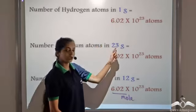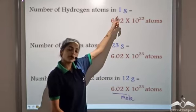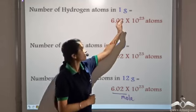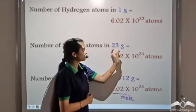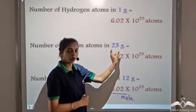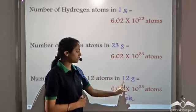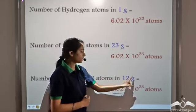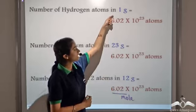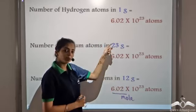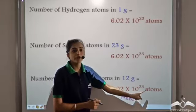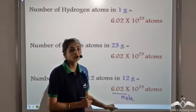This number appears when we express the relative atomic mass in grams. The relative atomic mass of hydrogen is 1; when expressed in grams it is known as the gram atomic mass. 23 is the relative atomic mass of sodium expressed in grams — that is the gram atomic mass of sodium. Similarly, 12 expressed in grams is the gram atomic mass of carbon. So in the gram atomic mass of each of these three elements, the number of atoms present is 6.02 × 10²³, and this special number is known as a mole.